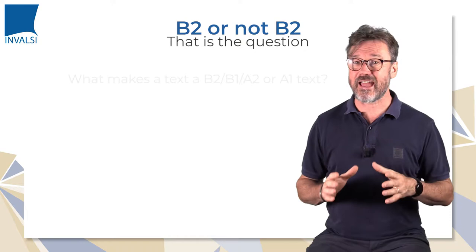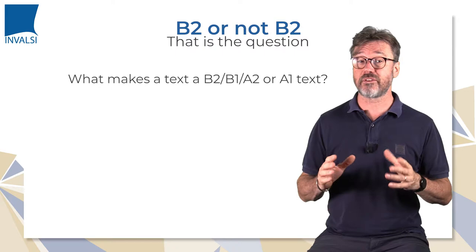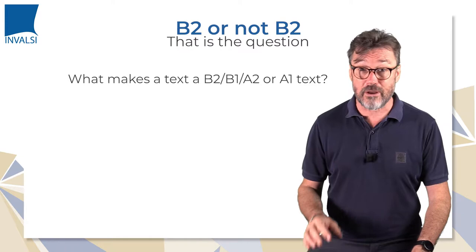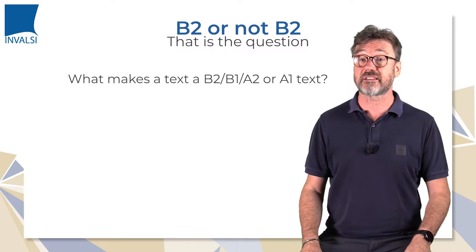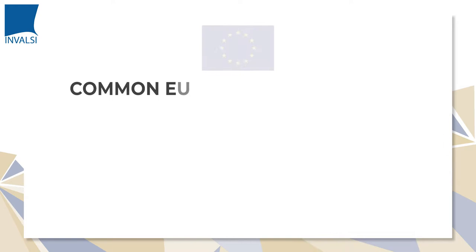So, what makes a text a B2, B1, A2, or A1 text? In order to identify the features of texts representative of each level, it's worth referring back to the CEFR descriptors, to highlight keywords which will help us select suitable texts consistent with the target level.